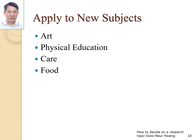The third innovation method is applying research to new subjects. The subjects studied by most scholars are Chinese, English, mathematics, nature, science, and information — it is not easy to make improvements there. So we can also think about research in more special and less popular subjects, such as art, physical education, care, or food. Compared with Chinese, English, mathematics, science, or information, there should be fewer people researching those areas.